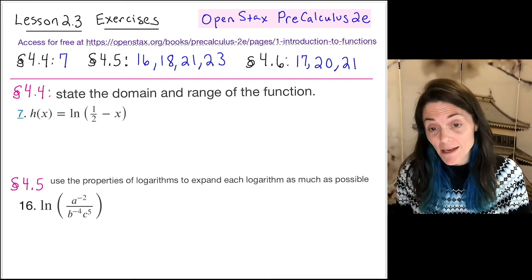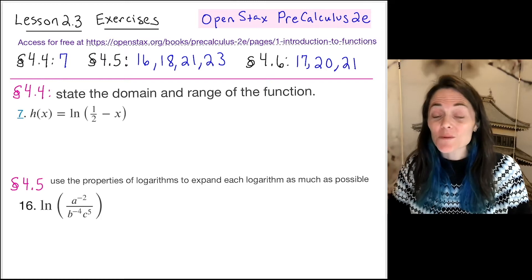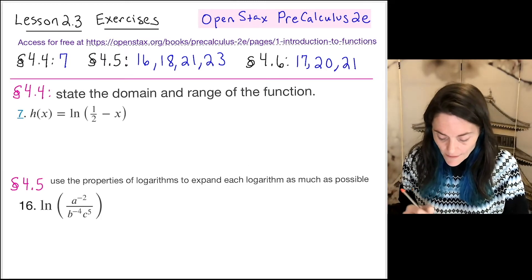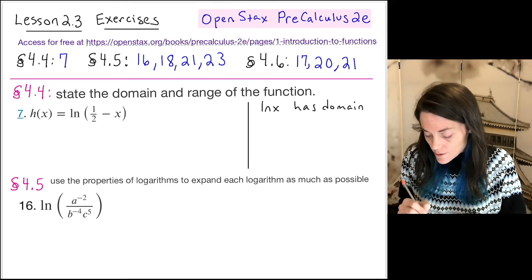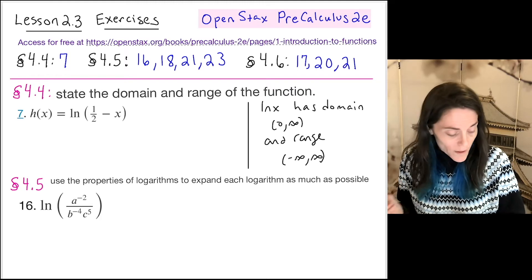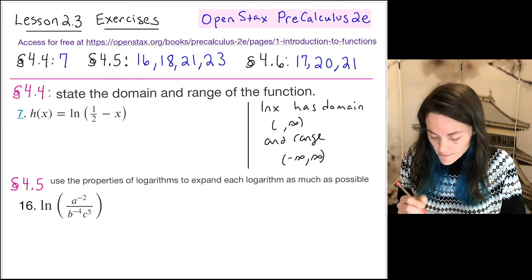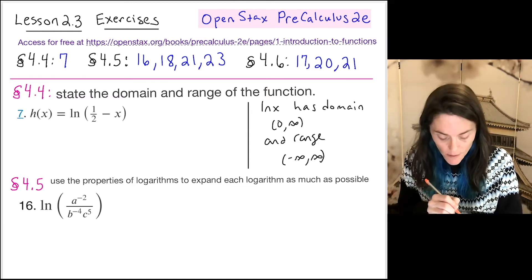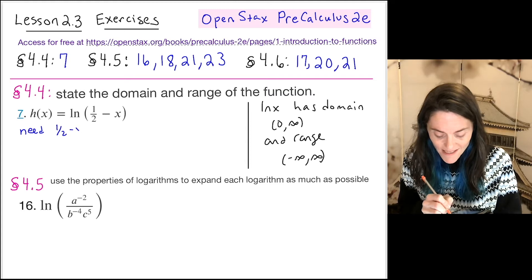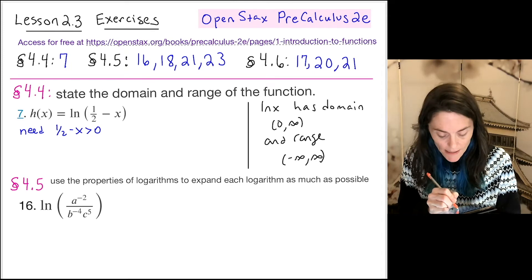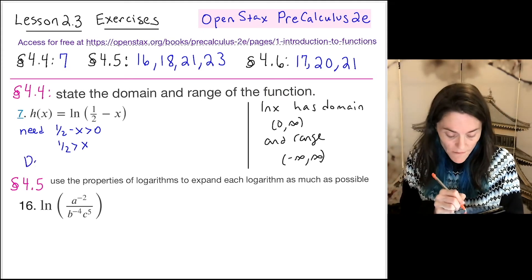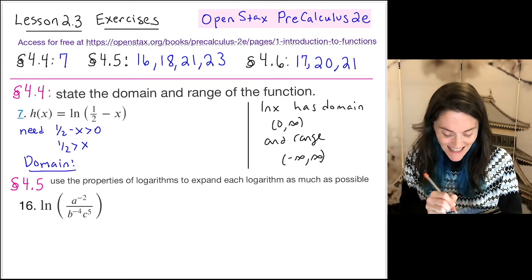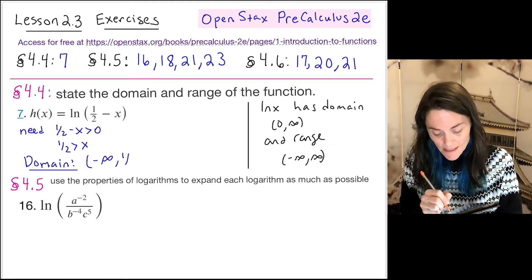In this first problem we want to state the domain and range for this function. If we just had natural log x, that has domain (0, ∞) and range (−∞, ∞). But what we really have here is a function composition, so what's inside the log must be strictly positive. We need one-half minus x to be strictly positive, so adding x to both sides gives one-half greater than x. So x is strictly less than one-half, and the domain is (−∞, 1/2).